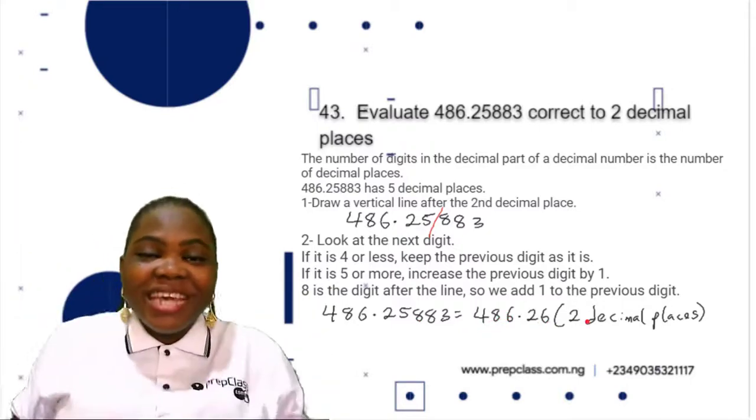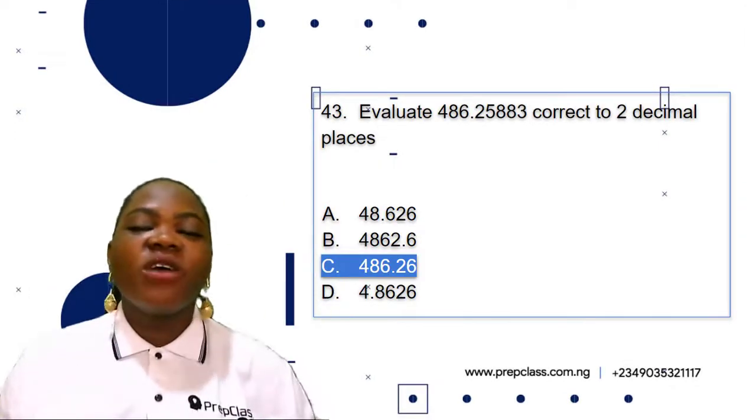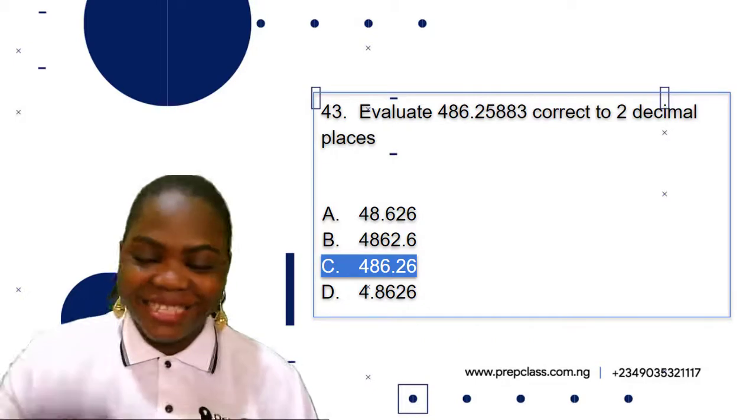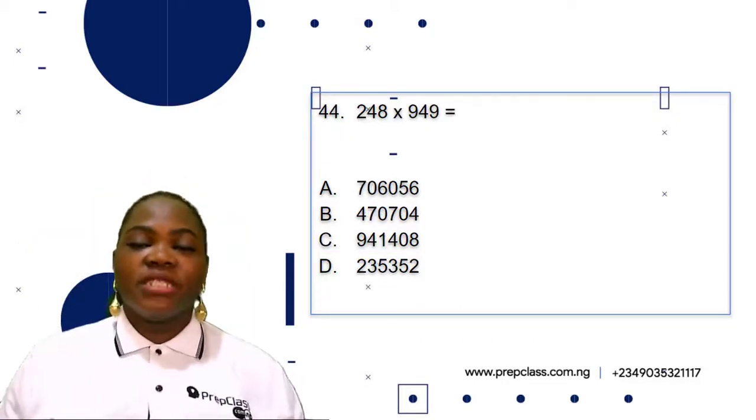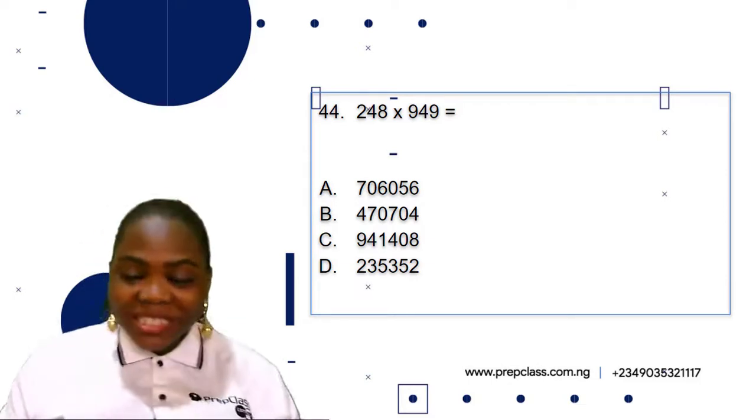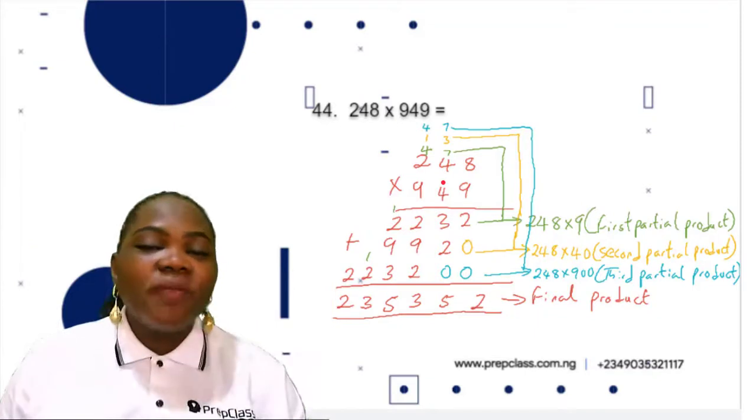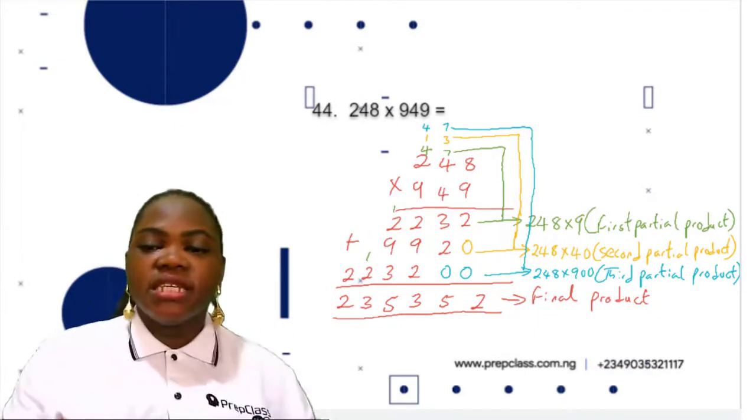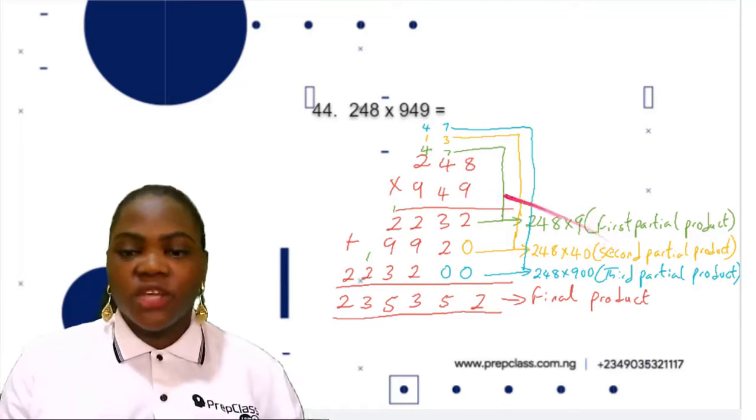Question 44: 248 multiplied by 949 is equal to what? This is just partial multiplication. First, we multiply 248 by 9 to give the first partial product.